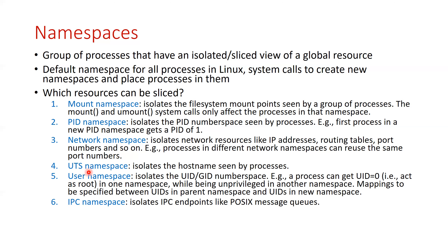The UTS namespace isolates the hostname seen by processes — different sets of processes can see different hostnames. Then you have the user namespace, which isolates the user ID (UID) and group ID (GID), so some processes can act as root in one namespace with UID equals zero. Finally, you can also isolate the IPC namespace, covering IPC endpoints like POSIX message queues. We won't be looking into IPC in more detail in this lecture.